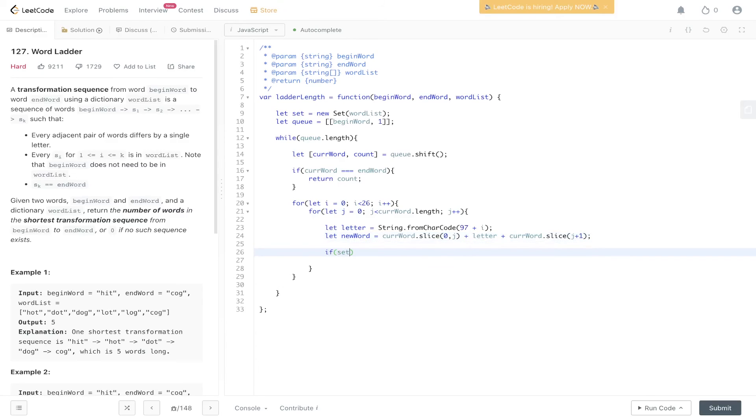And if this is found in set so if set has new word we add to the queue that new word so we push in new word and we update count to plus 1. Then in order to remove duplicate calculations and an infinite loop we need to remove that value from set. So set dot delete